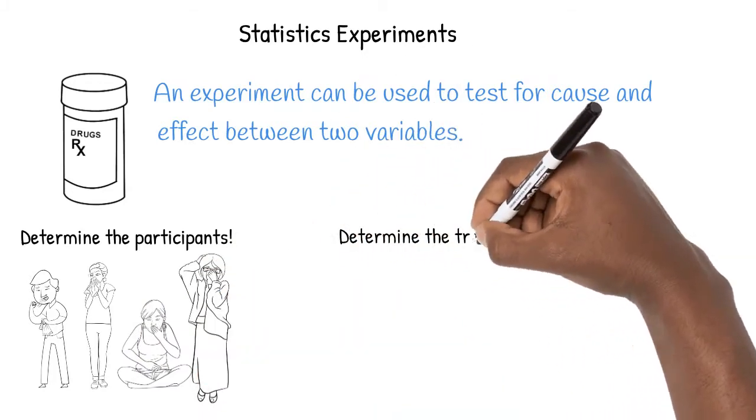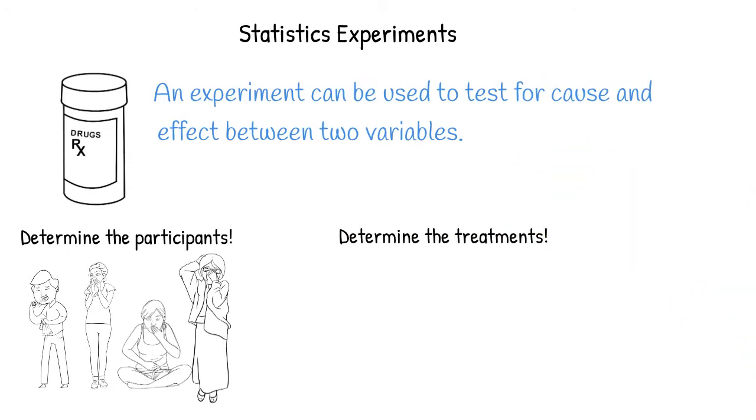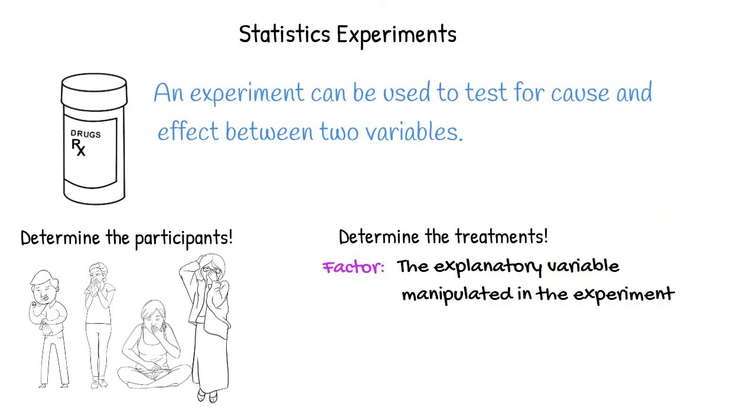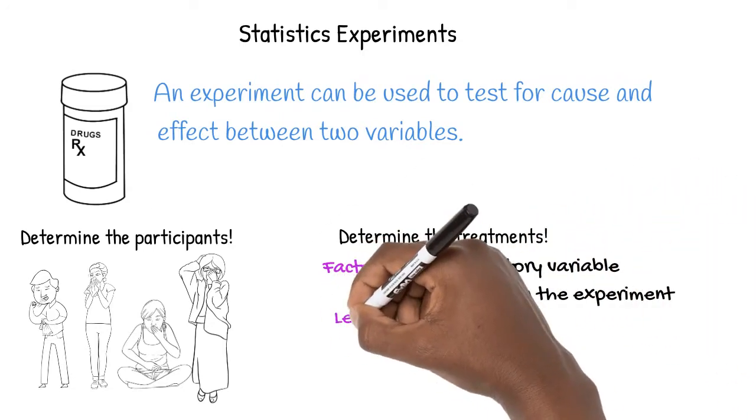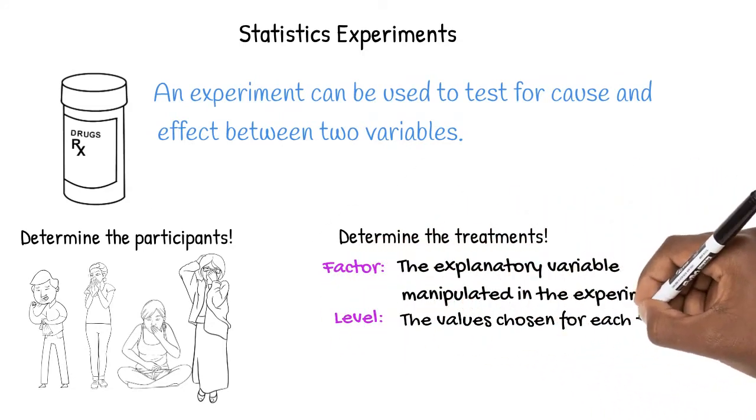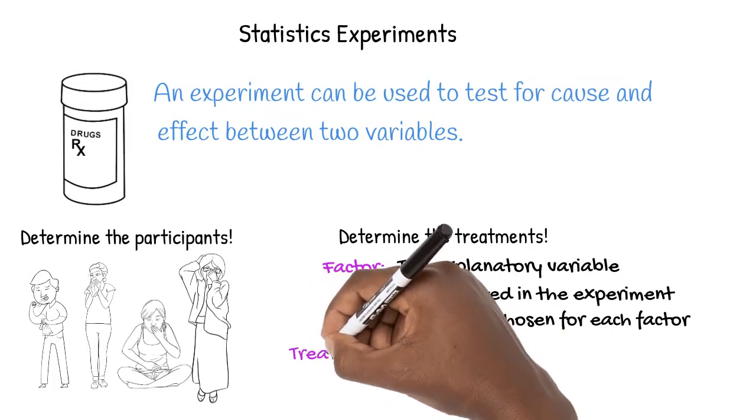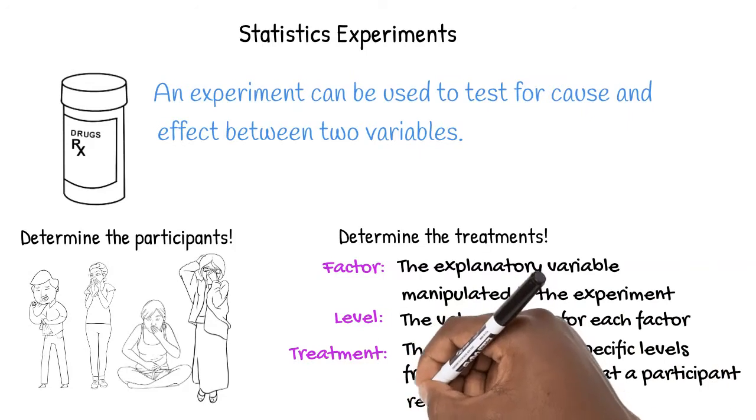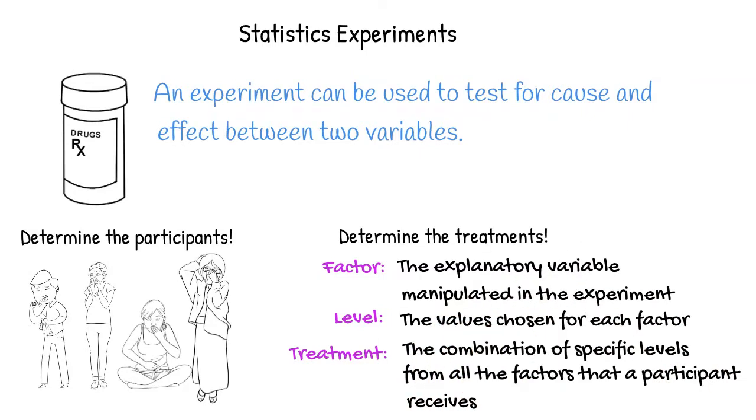Then, we can determine the treatment. To understand what a treatment is, we first need to understand the terms factor and level. A factor is an explanatory variable manipulated in an experiment, and the values chosen for each factor is its level. The combination of all the factors that a participant receives is his or her treatment. In our experiment, the factor is the use of medication.